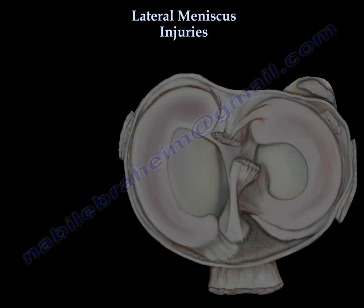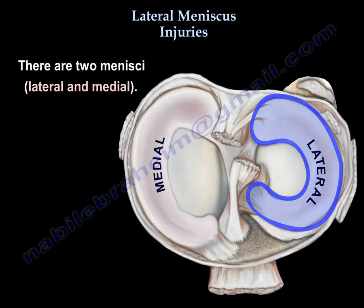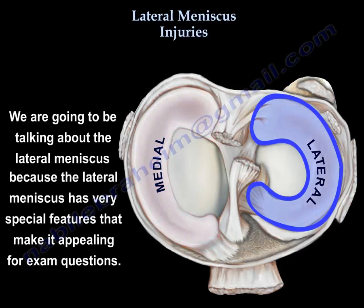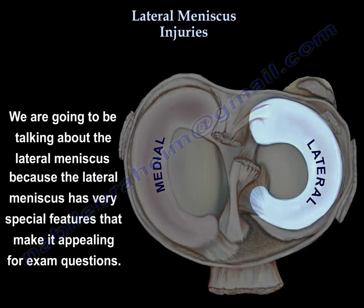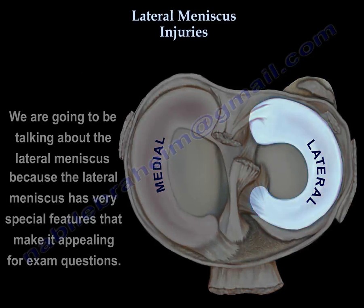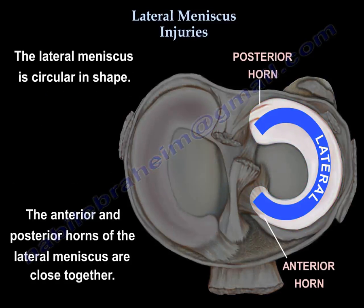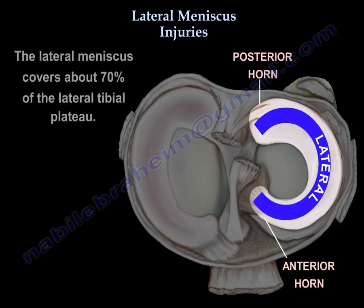There are two menisci: one lateral and one medial. We're going to be talking about the lateral meniscus because it has very special features that make it appealing for exam questions. The lateral meniscus is circular and the anterior and posterior horns are closer together. The lateral meniscus covers about 70% of the lateral tibial plateau.